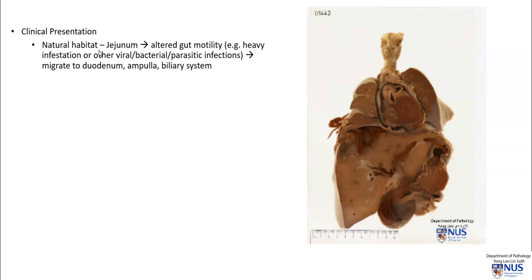Clinically, the natural habitat is the jejunum, but these worms tend to have a propensity to migrate towards small spaces. So if there is anything giving rise to altered gut motility — for example, a very heavy infestation or perhaps a coexisting infection in the gut — they can then migrate to the duodenum, as we have seen in this case, and from there they can crawl into the ampulla and into the biliary system and liver.